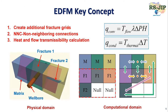What EDFM does — I want to use a simple example to show the key concept. In this example, you can see we have three simple matrix blocks and we try to model two 3D fractures. In the computational domain, we will have two different grids: one is a matrix grid, and the second is a fracture grid. You can see fracture one will be divided by three segments by the boundary of the matrix, giving three fracture blocks. In the second step, we will automatically check their non-neighbor connections.